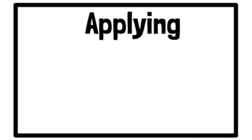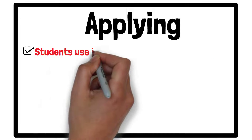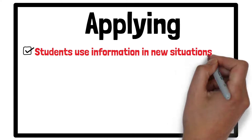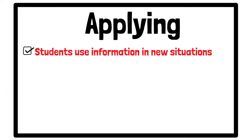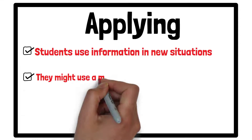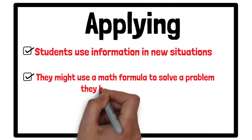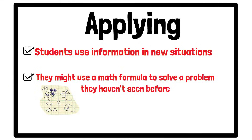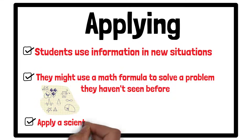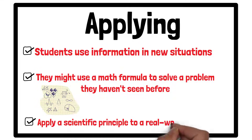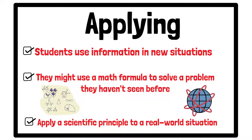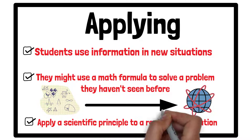Applying is the third level. Students use information in new situations. For instance, they might use a math formula to solve a problem they haven't seen before, or apply a scientific principle to a real-world situation. This level is about using knowledge in practical ways.